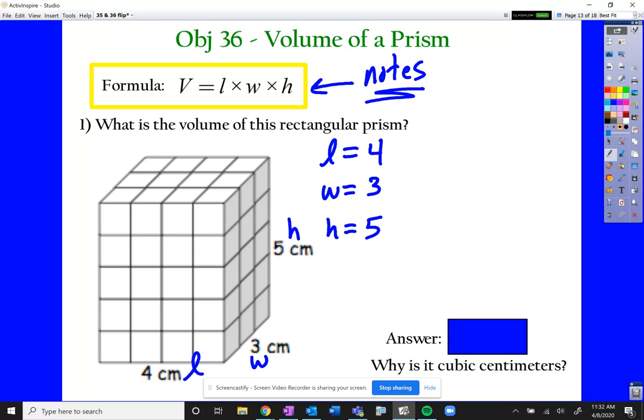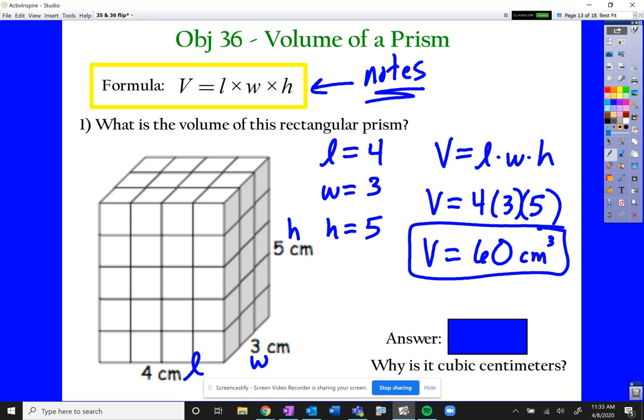Volume equals length times width times height. Our length is 4, our width is 3, our height is 5. And yes, it is as simple as it seems. Multiply those: 4 times 3 times 5 equals 60 centimeters. But now guys, we are working in the third dimension, so our units must be to the third power, which we call units cubed. Centimeters cubed.